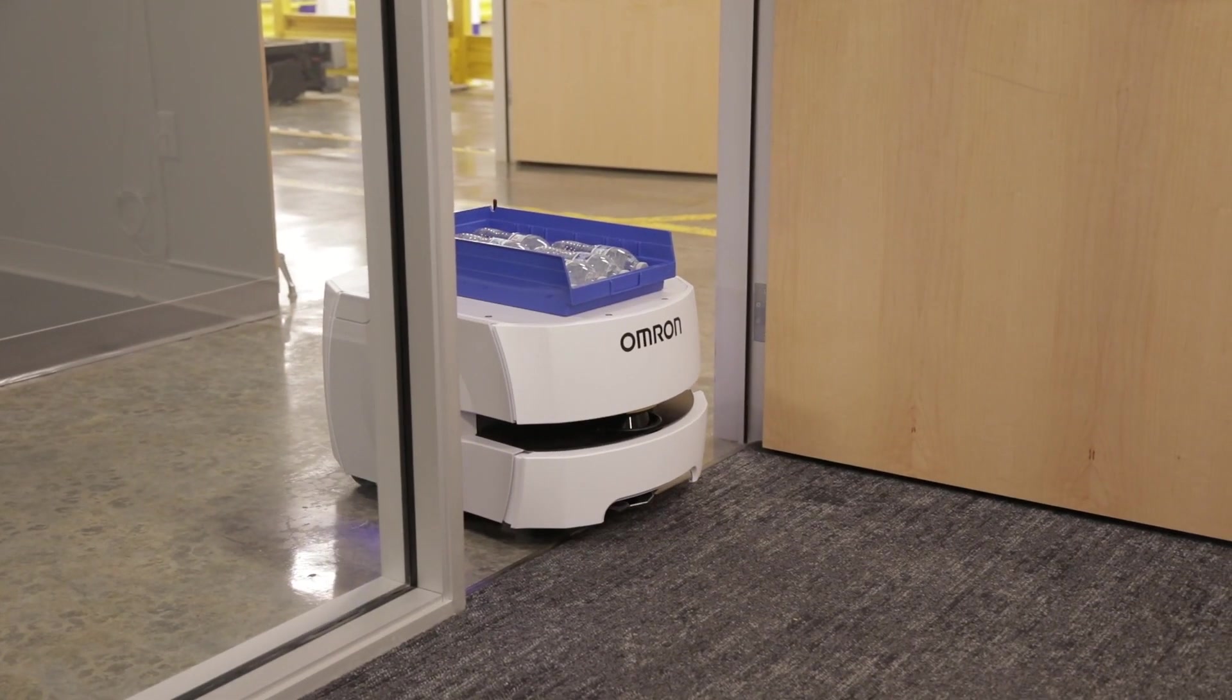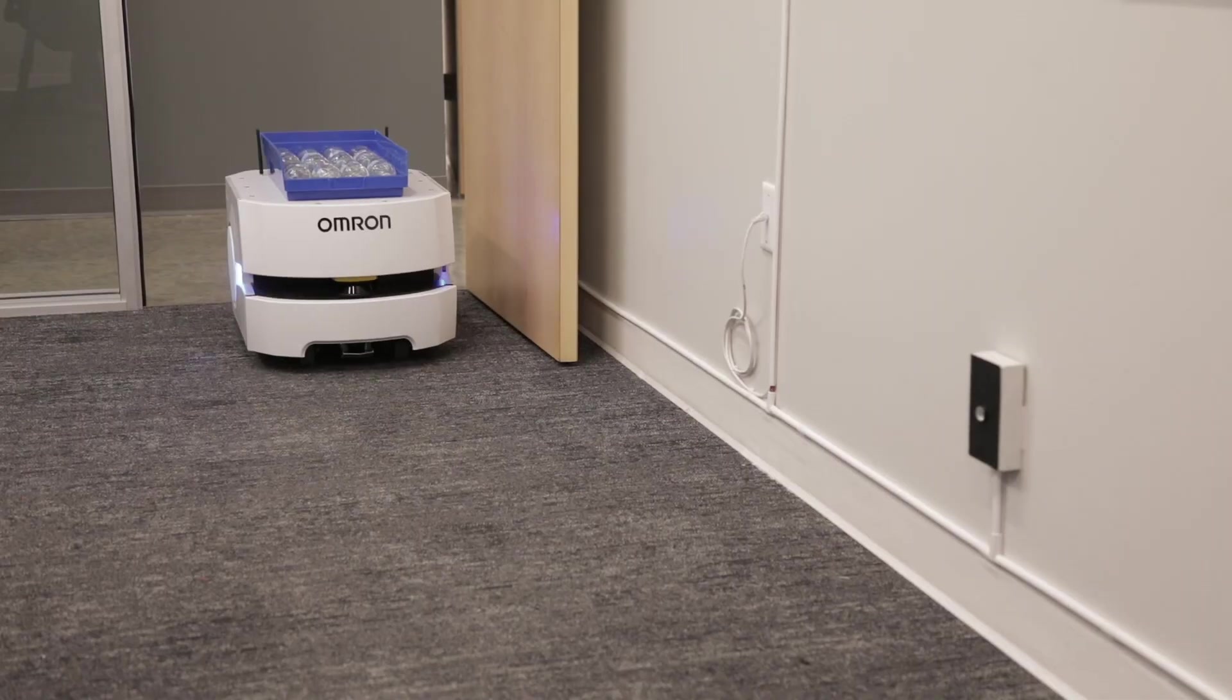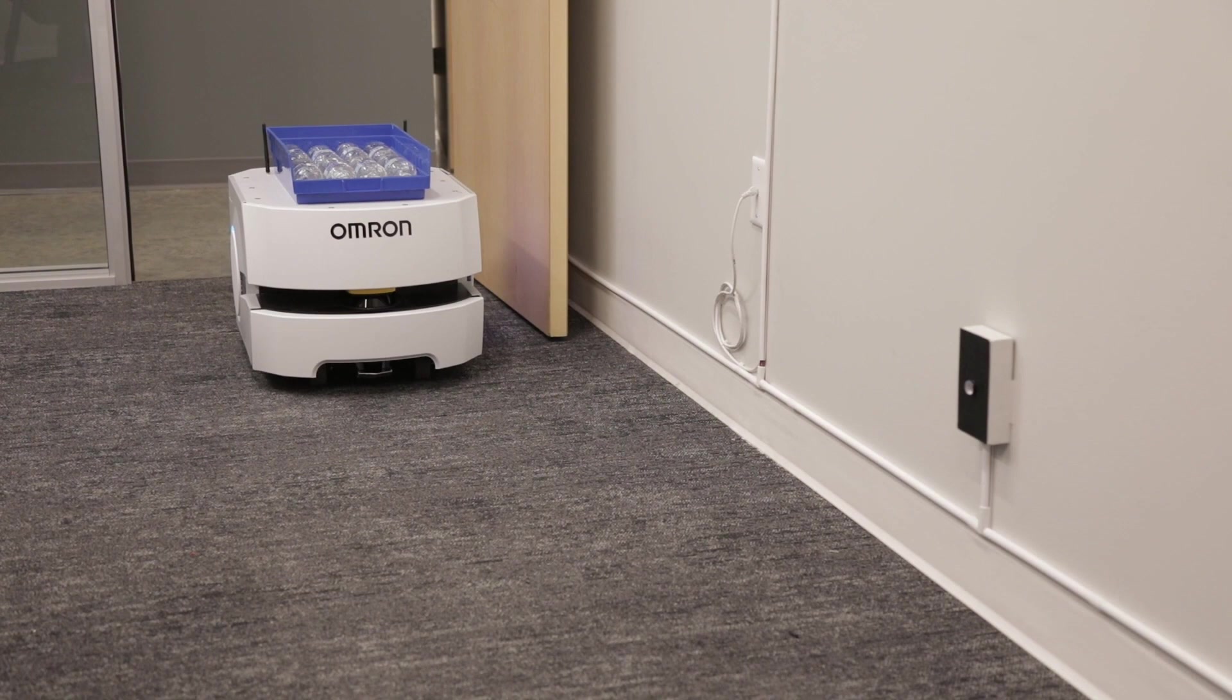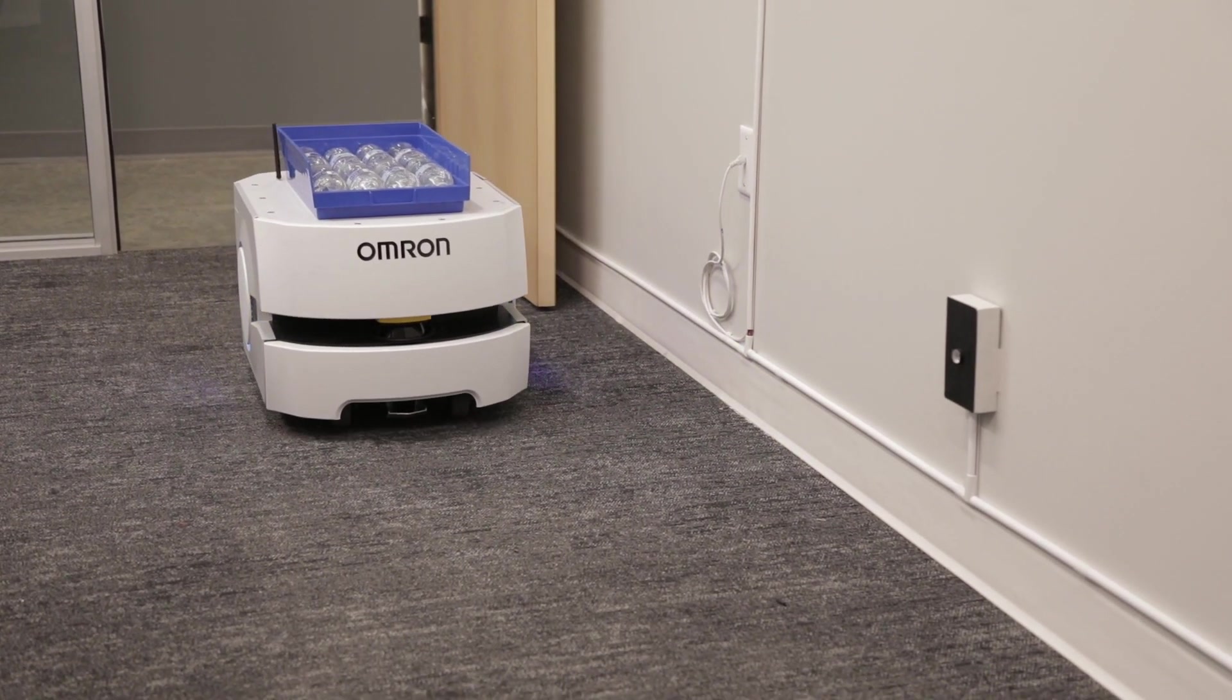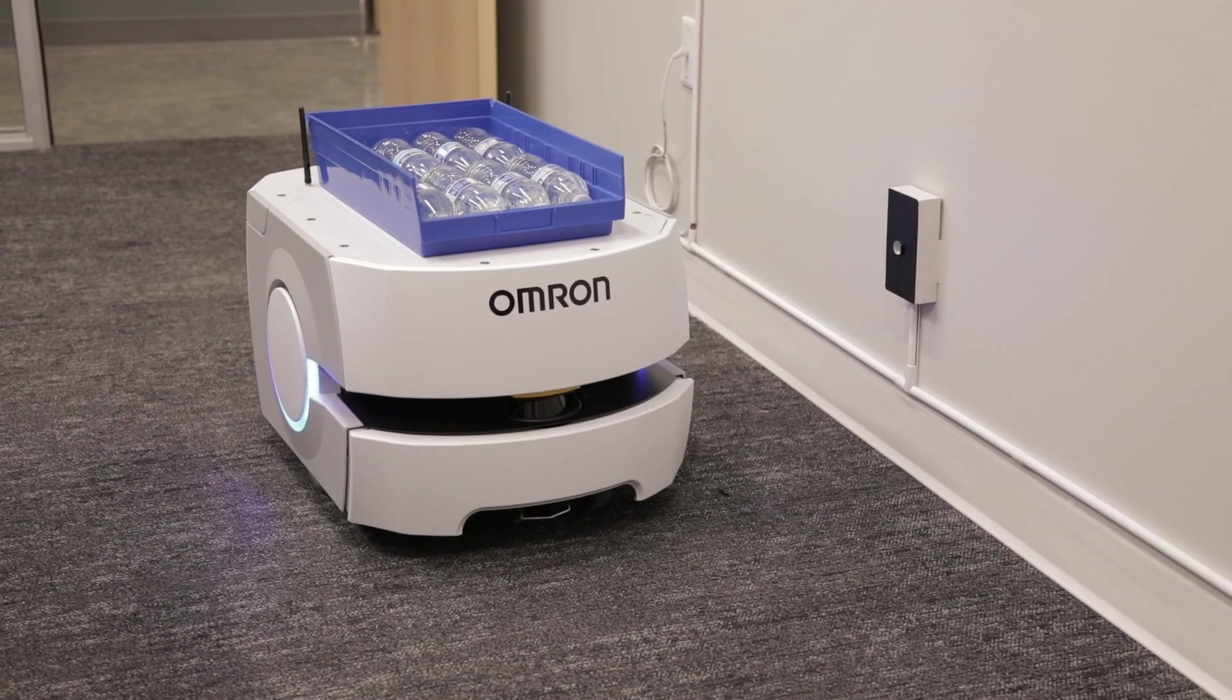Because the Mobile I.O. Box has six outputs, in conjunction with controlling the door, it can be programmed to control other devices. In this use case, we used the Mobile I.O. Box to turn on a light when the AMR reaches the goal.